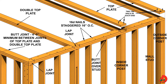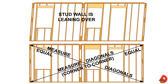Butt joints between the topmost plates should be at least 4 feet from any butt joint between the plates below them. A framed wall is often squared while it is lying on the subfloor. Walls are squared using two tape measures diagonally across the opposite corners. When the two diagonal measurements are equal, the wall is square and then it can be braced using braces or by nailing structural panels or other exterior wall sheathing to keep the wall square while being raised.